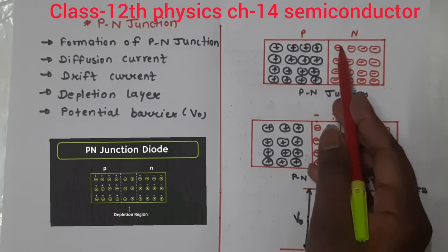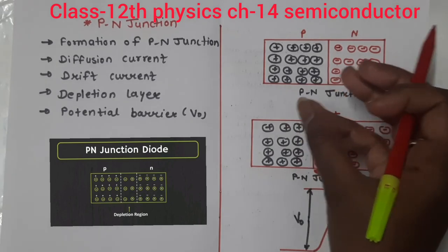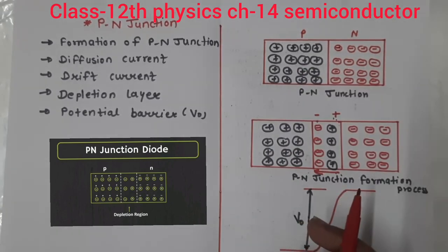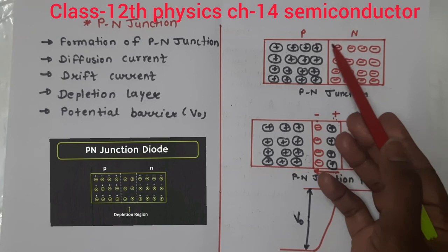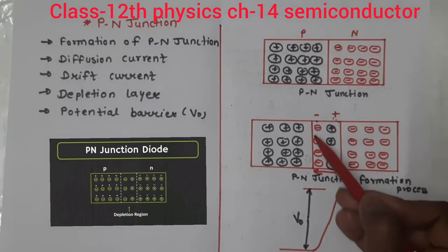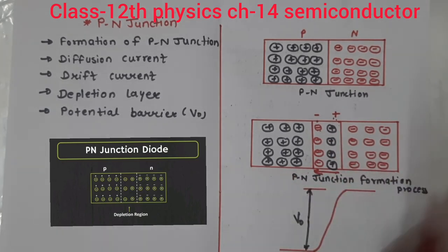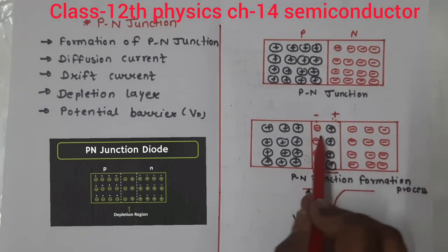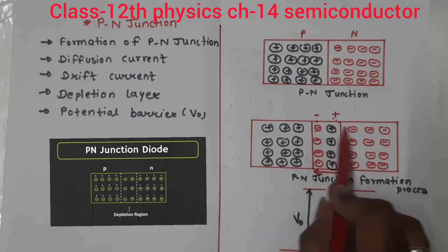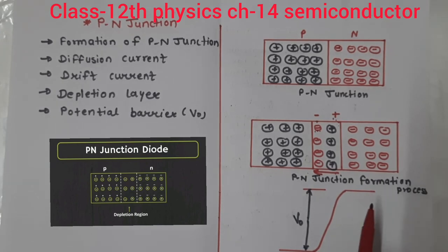When the electrons diffuse across the junction, this creates the diffusion current. Due to the electric field, the electrons are pushed back to the N-side and the holes are pushed back to the P-side. This current caused by the electric field is called the drift current. The diffusion current and drift current are opposite in direction.